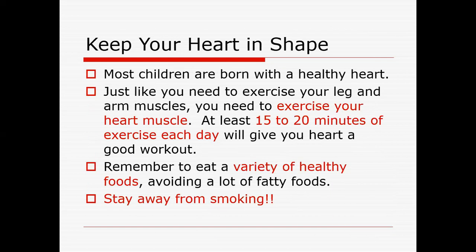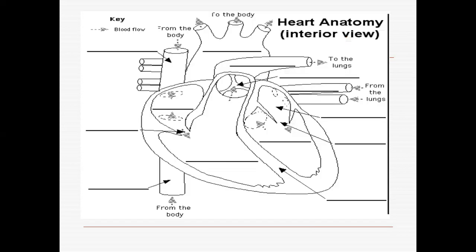Always keep your heart in shape. Most children are born with a healthy heart. Just like you need to exercise your leg and arm muscles, you need to exercise your heart muscles. To keep your heart healthy, you should do at least 15 to 20 minutes of exercise a day so your heart can efficiently pump blood. Always eat healthy food, avoid a lot of fatty food, and stay away from smoking. This is the internal anatomy of the human heart, containing the right atrium, right ventricle, left atrium, and left ventricle.